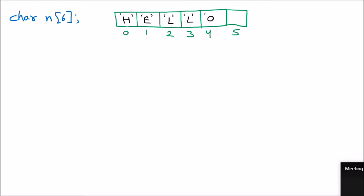An important thing: inside a character array we can even have 'well done'. When we talk about character values, there can be a space — so the space is a valid character value. That is very important. Now I am going to take one more example: if I want to store 'well done', I am taking a character array.